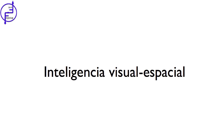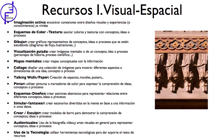Inteligencia visual-espacial, ¿cómo trabajar con ella? Para estimular la inteligencia visual-espacial podemos utilizar los siguientes recursos: imaginación activa, esquemas de color, dibujar, visualización guiada como crear imágenes mentales de un concepto, idea o proceso, mapas mentales, diseñar una colección de imágenes para mostrar diferentes aspectos o dimensiones de una idea, concepto o proceso, creación de espacios, pósters, utilizar pinturas o marcadores de color para expresar la comprensión de ideas, crear escenarios en la mente en base a una información o datos, crear o esculpir, uso de la fotografía, el vídeo y las artes visuales en general para representar conceptos, ideas o procesos y utilizar herramientas tecnológicas para dar soporte al resto de recursos.